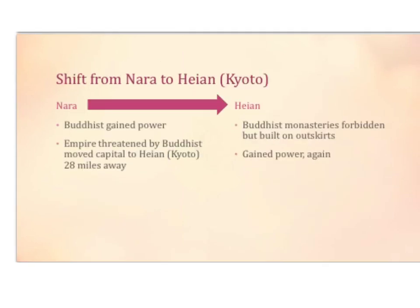This power struggle gets so intense that the emperor leaves Nara for Heian, which is modern-day Kyoto. The arrow on the map shows the shift from Nara to Heian. The Buddhists gain power and would be against the rise of Chinese values in Japan. The empire is threatened by Buddhism, which is why they move. Heian is only 28 miles from Nara. In Heian, Buddhist monasteries are forbidden; however, they're built on the outskirts and do wind up gaining power.